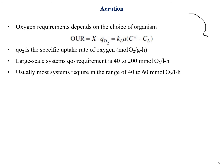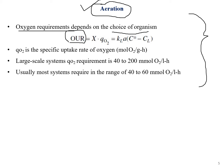Now let's start with the technical topic of aeration involved in fermentation. Aeration is especially important when talking about non-agitated systems. The oxygen requirements depend on the choice of organism. The Oxygen Utilization Rate (OUR) equals x · qO2, where x is the cell concentration and qO2 is the specific oxygen uptake rate. This can also be written as KLa · (C* − CL), where KLa is the volumetric mass transfer coefficient, C* is the saturated oxygen concentration, and CL is the dissolved oxygen concentration.